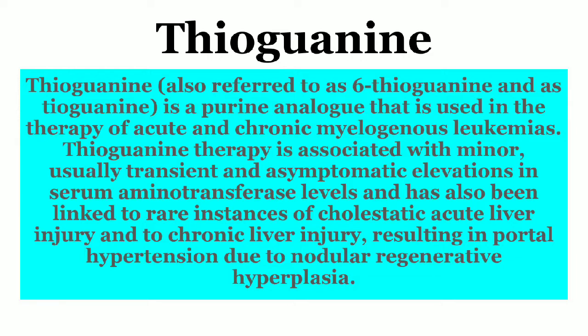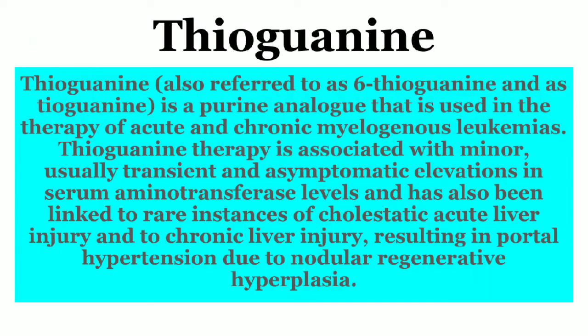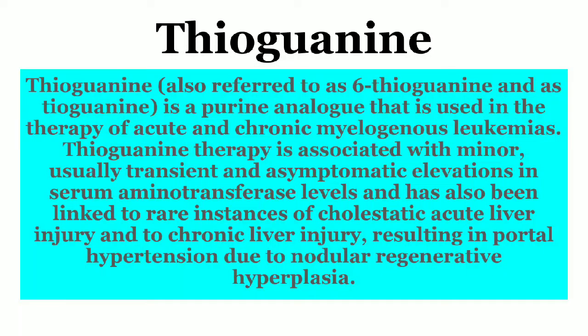Thioguanine is a purine analogue that is used in the therapy of acute and chronic myelogenous leukemias. Thioguanine therapy is associated with minor, usually transient and asymptomatic elevations in serum aminotransferase levels, and has also been linked to rare instances of cholestatic acute liver injury and chronic liver injury resulting in portal hypertension due to nodular regenerative hyperplasia.